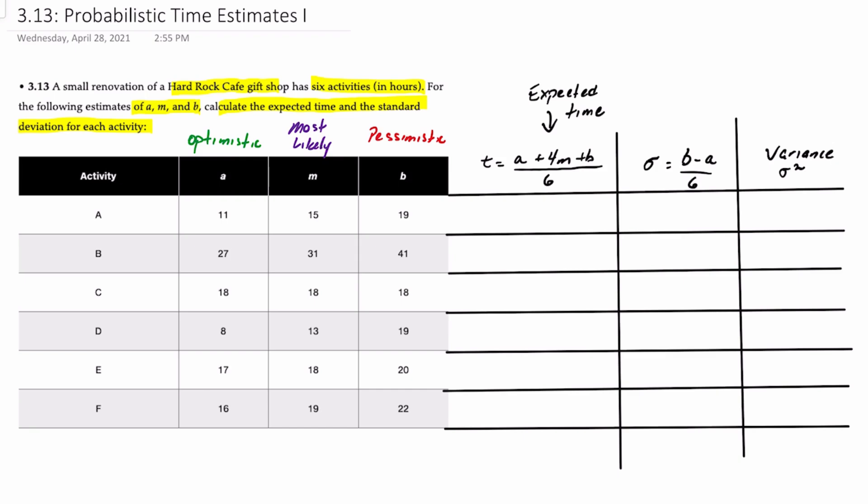Remember that these time estimates follow a Poisson distribution, but what we need to do for the purposes of project management is translate those into a normally distributed expected time or T. So the formula for expected time T is A plus 4M plus B divided by 6.